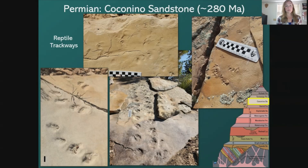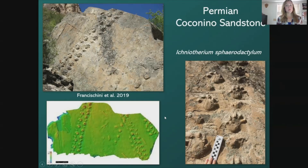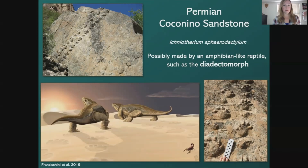Here are different footprints of various sizes of reptile prints that we find — some much bigger, some much smaller. One of the bigger ones, also well studied, is called Laoporus spherodactylus. Each of these footprints is about the size of a hand, and it was thought to have possibly been made by an amphibian-like reptile called a diadectomorph — creatures that sort of look like Komodo dragons.